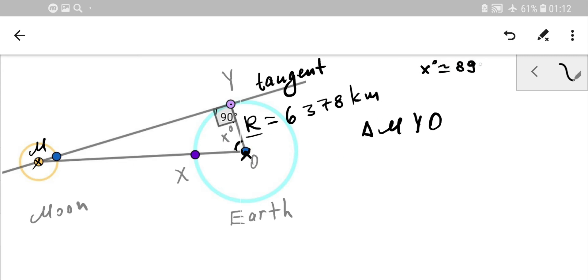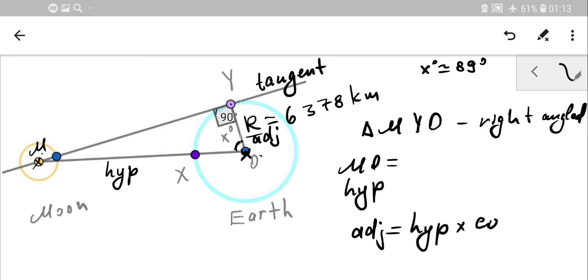How can we use this data to calculate the distance to the moon, MO? MO is the hypotenuse since this is a right-angled triangle. We have the radius which is known—this is the adjacent side. From trigonometric equations, adjacent side = hypotenuse × cos(x).